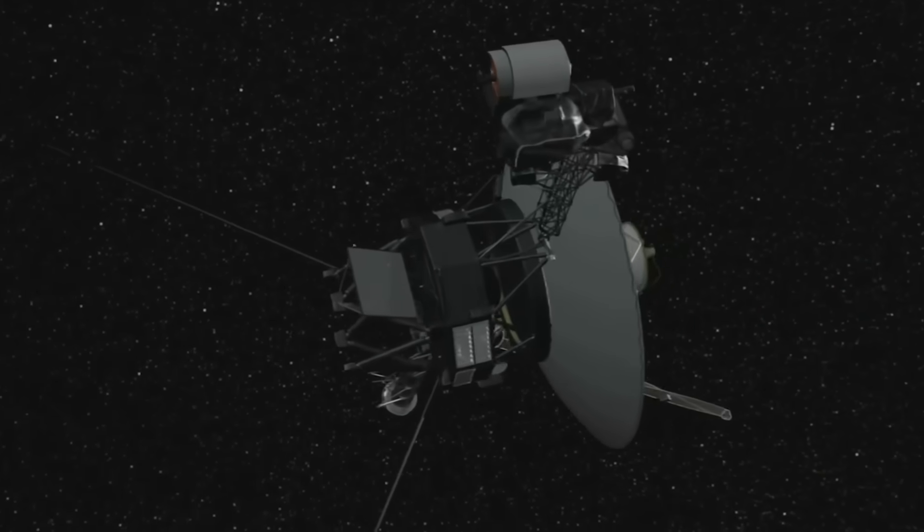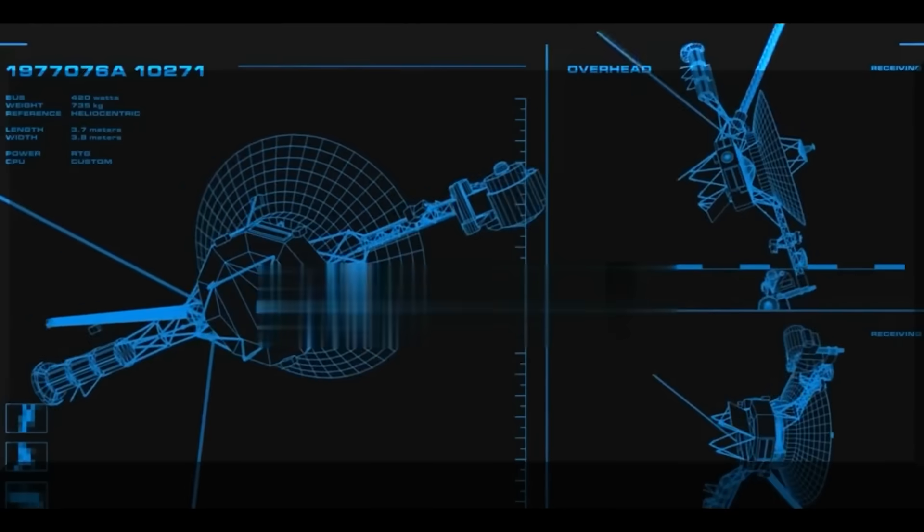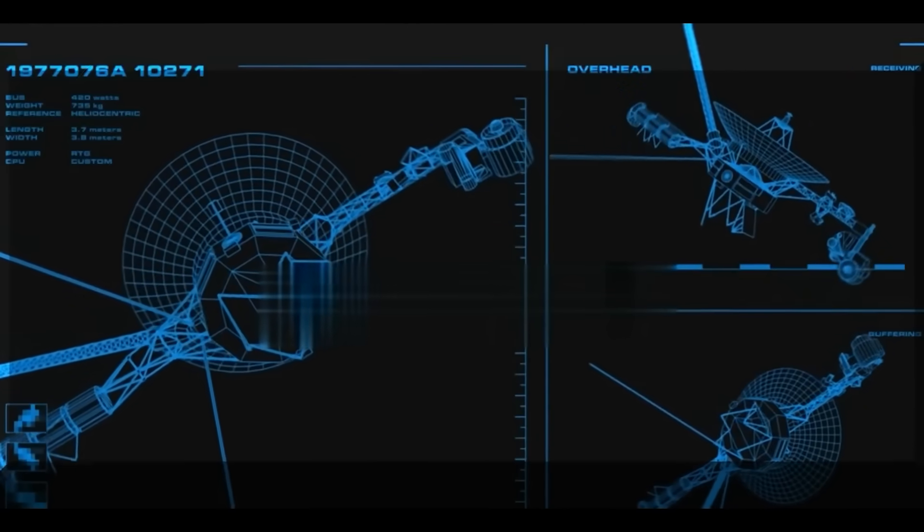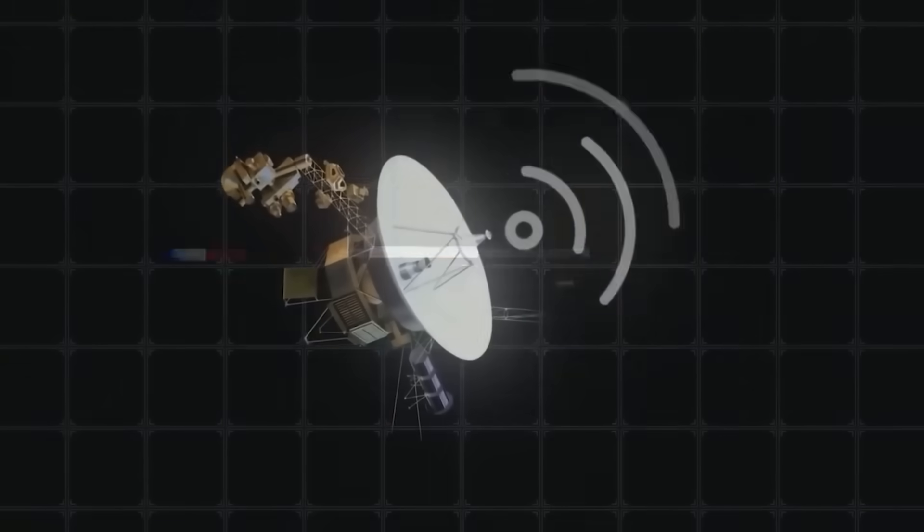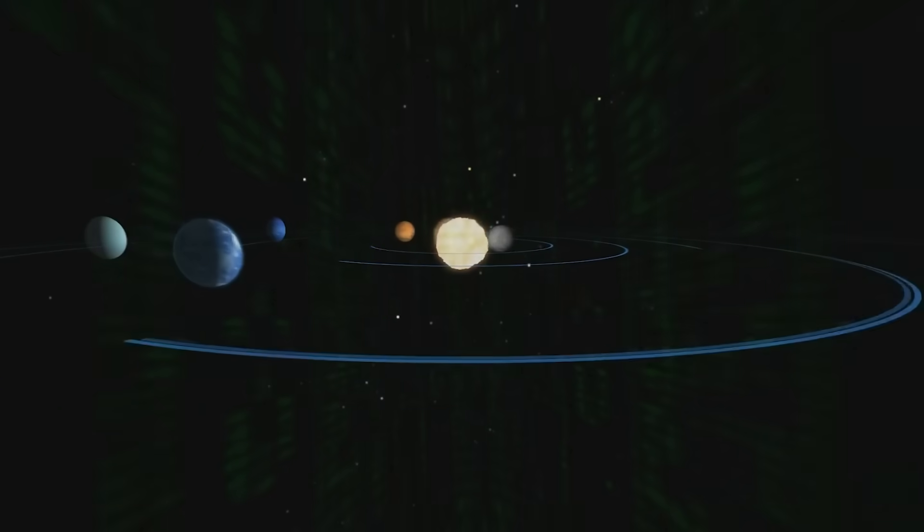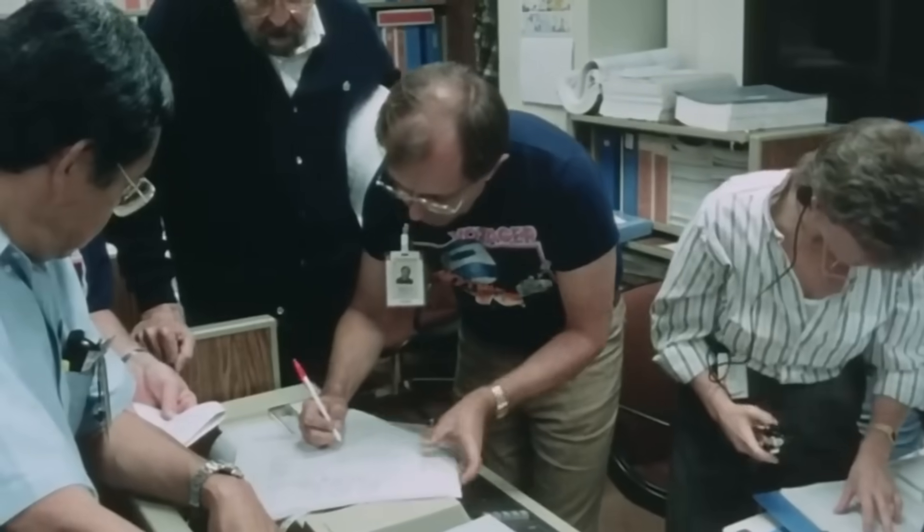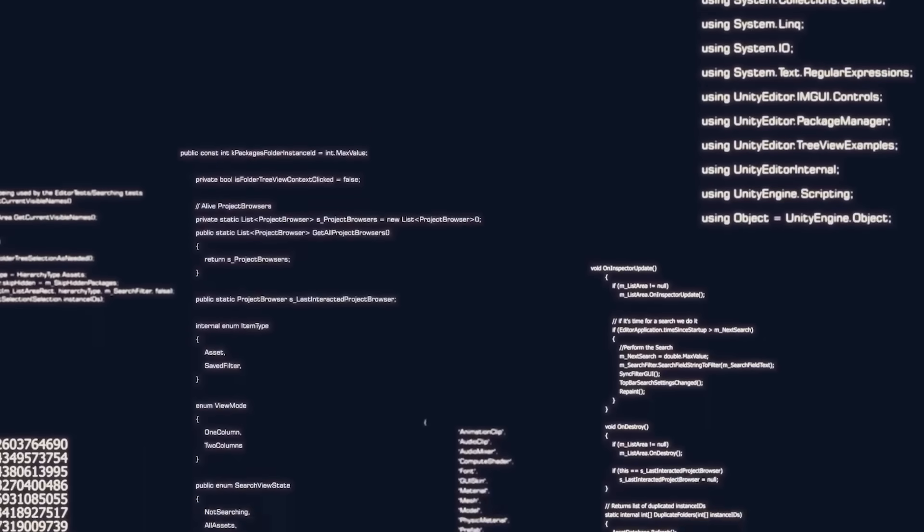And then came the alignment. Voyager's magnetometers showed that the sun's magnetic field was almost perfectly aligned with the interstellar magnetic field just beyond the boundary. Scientists had expected chaos, turbulence, a clash of opposing forces. Instead, they found order. Precision. A pattern that suggests these fields might not be meeting randomly at all, but perhaps by design.